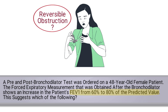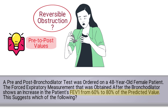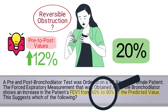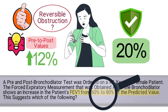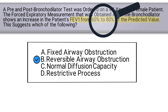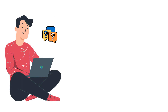Here's what to remember: if the patient's pre to post values increased by at least 12 percent, you know that the treatment was effective. In this case there was a 20 percent increase, which means the improvement was enough to interpret the patient's condition as a reversible airway obstruction. That tells us the correct answer is B, reversible airway obstruction.